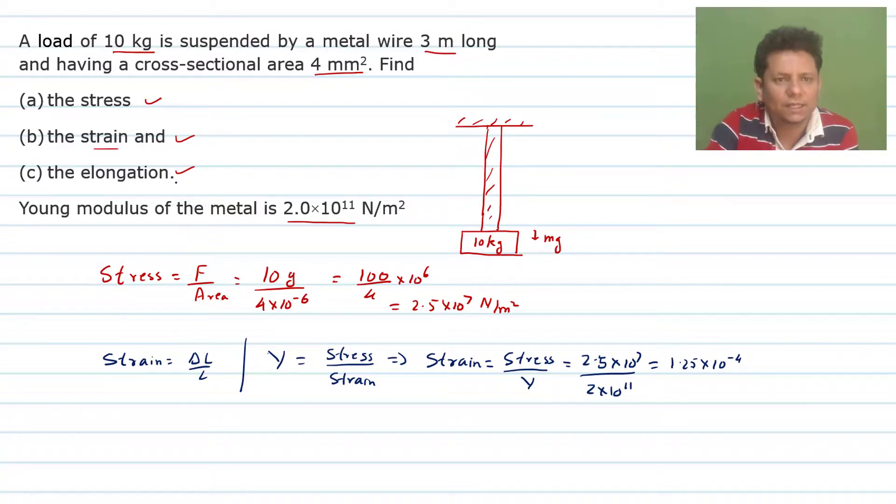So the last thing is how much the elongation will be. We will use this relation and we can say ΔL will be equal to L multiplied by strain. So length is 3 meter long, that will be equal to 3 multiplied by strain, so the value is 1.25 × 10⁻⁴.